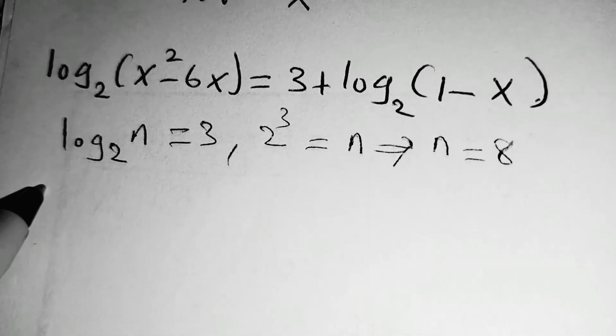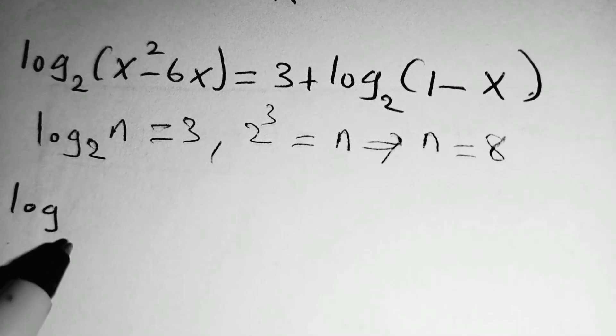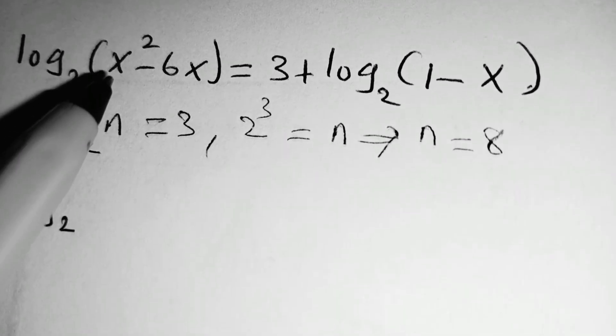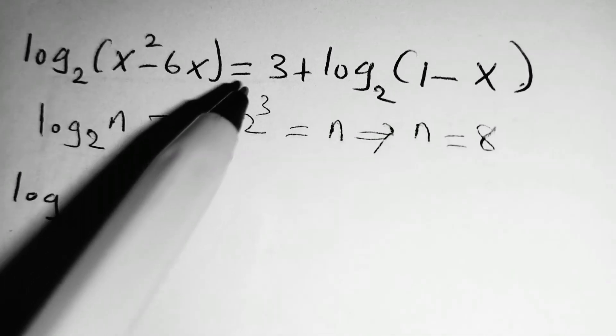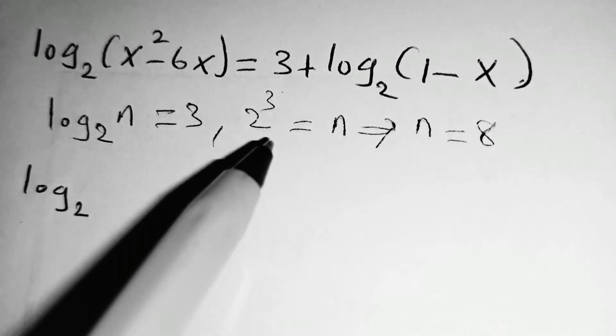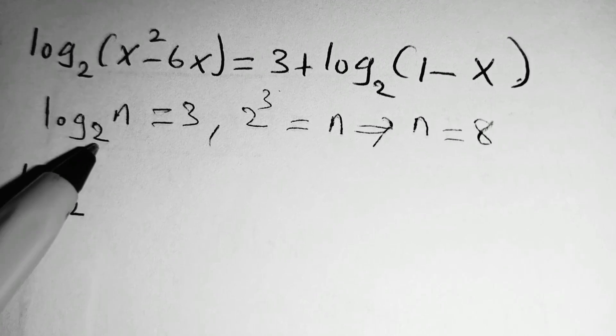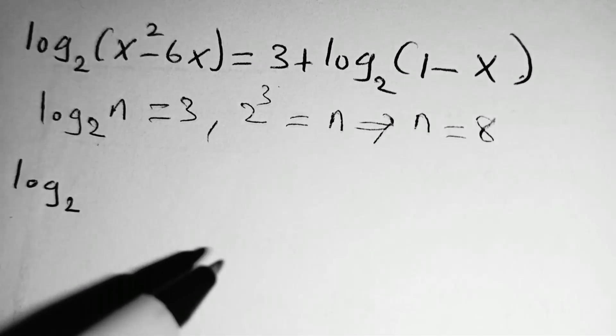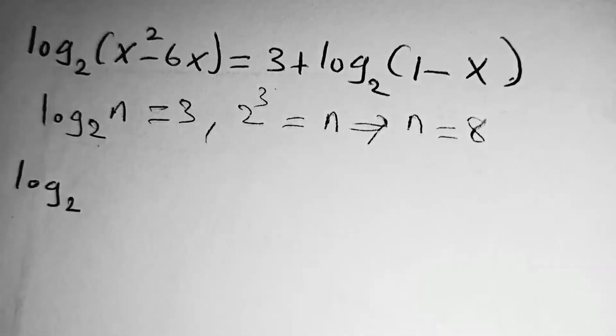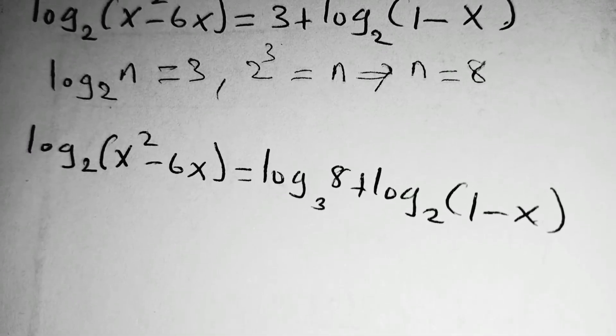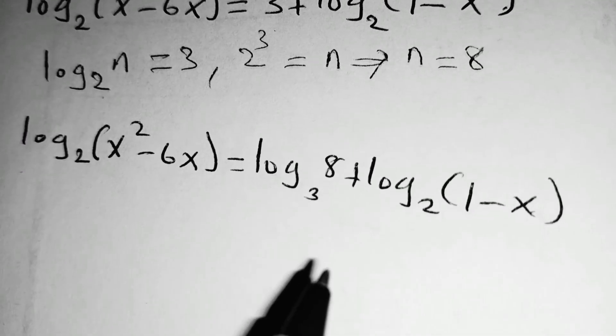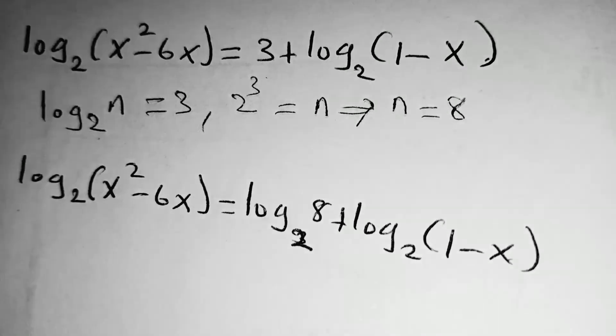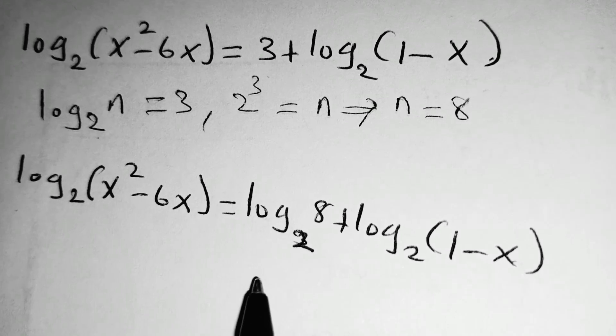So we are going to have log of x squared minus 6x. Instead of 3, we write log of 8 to base 2 plus log of 1 minus x, as follows. So this will be the result. Writing 3 in the form of log to base 2, we shall have this.